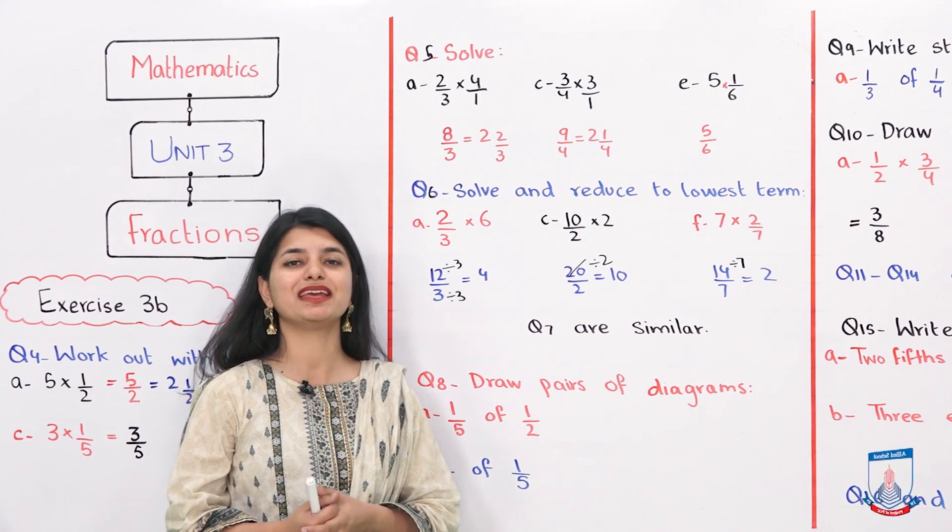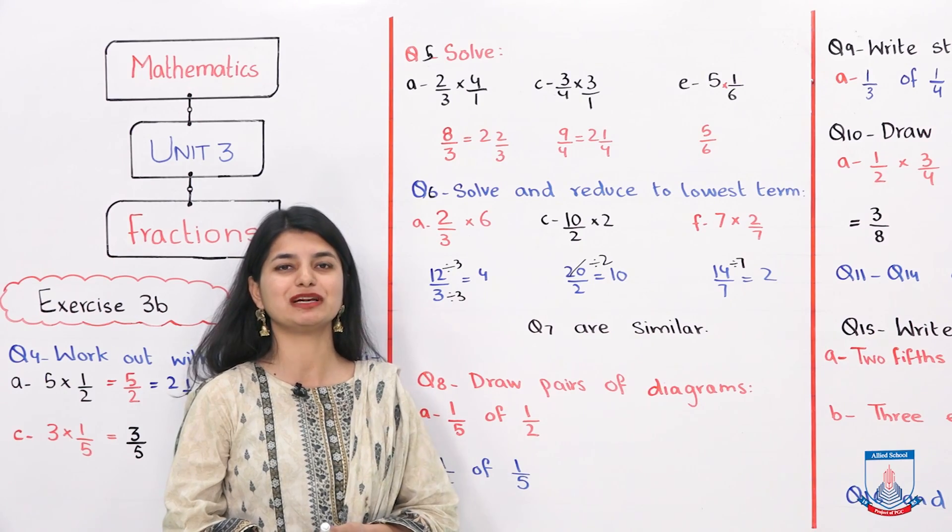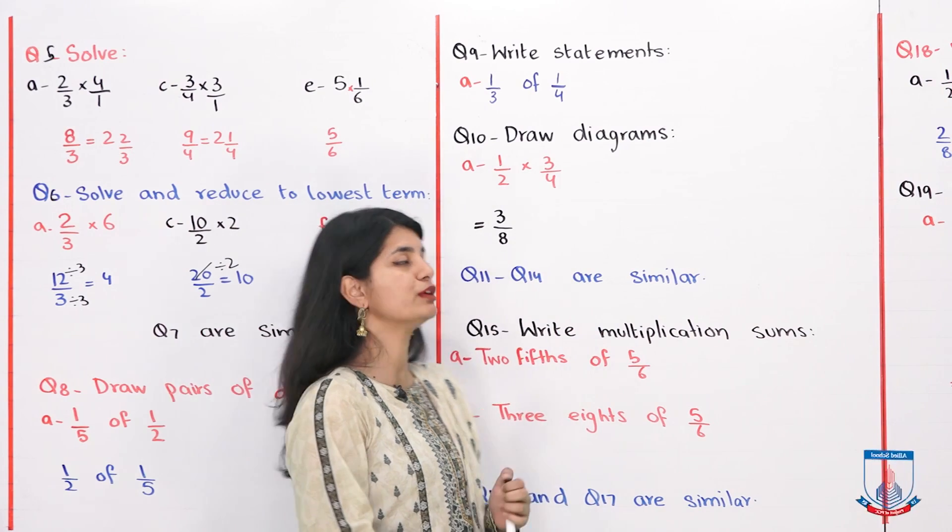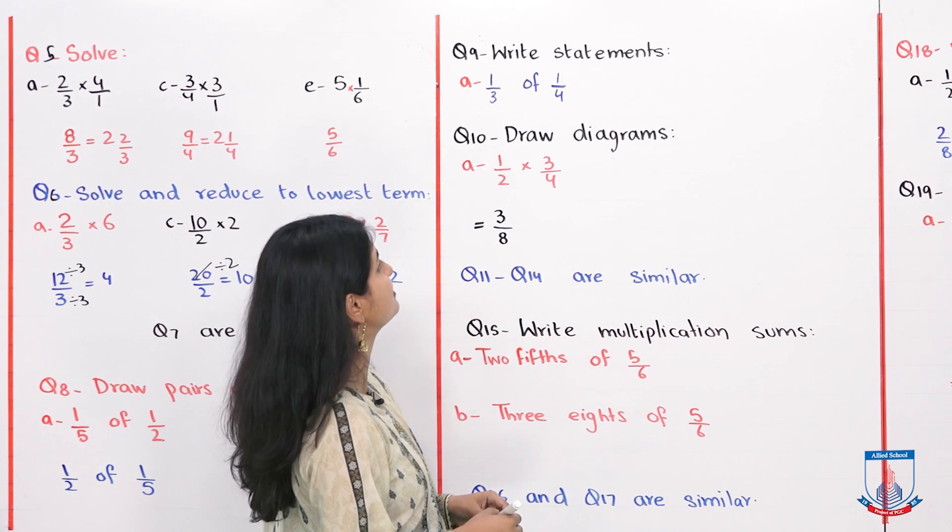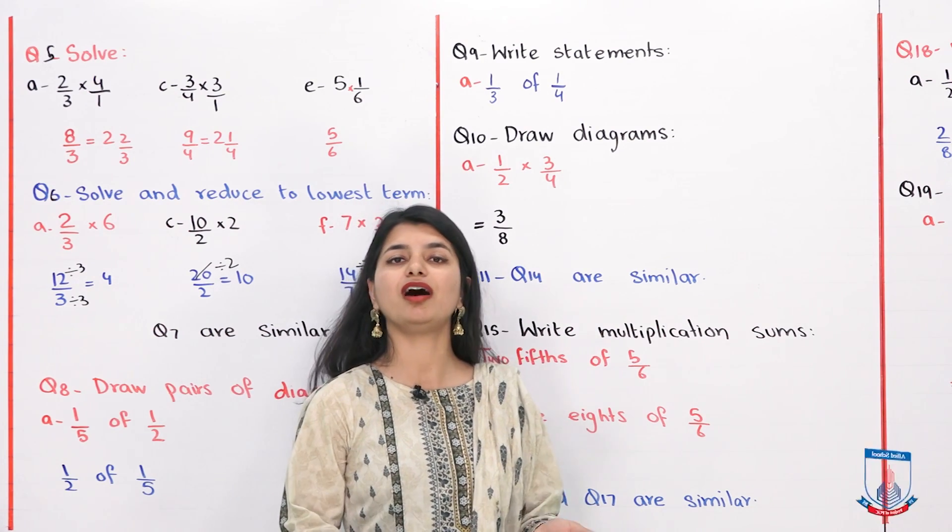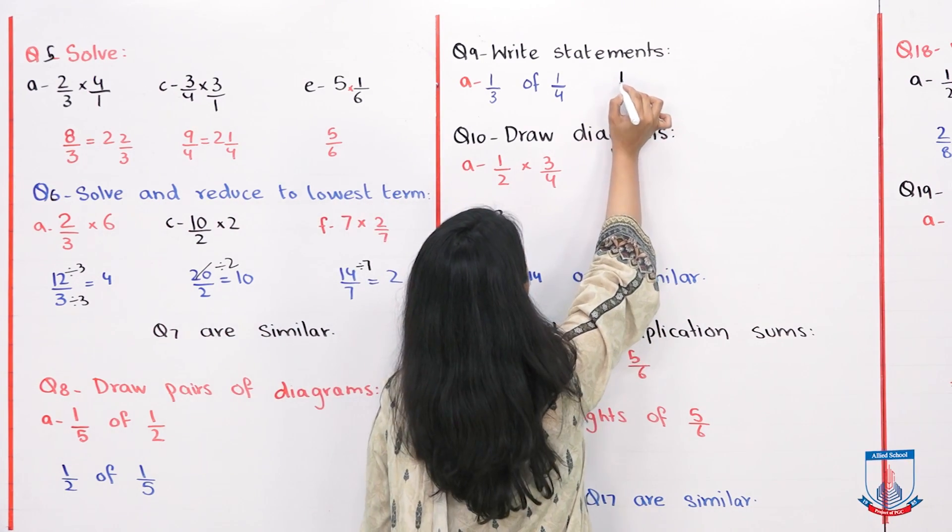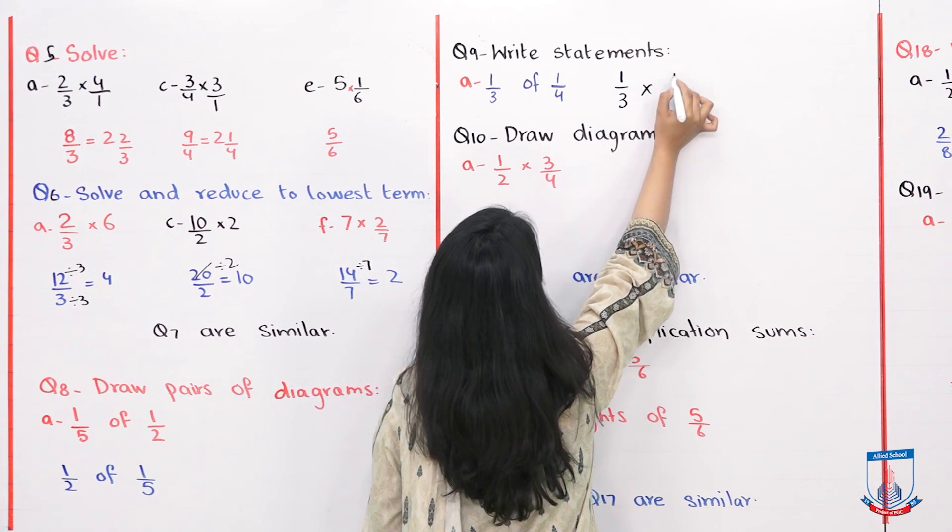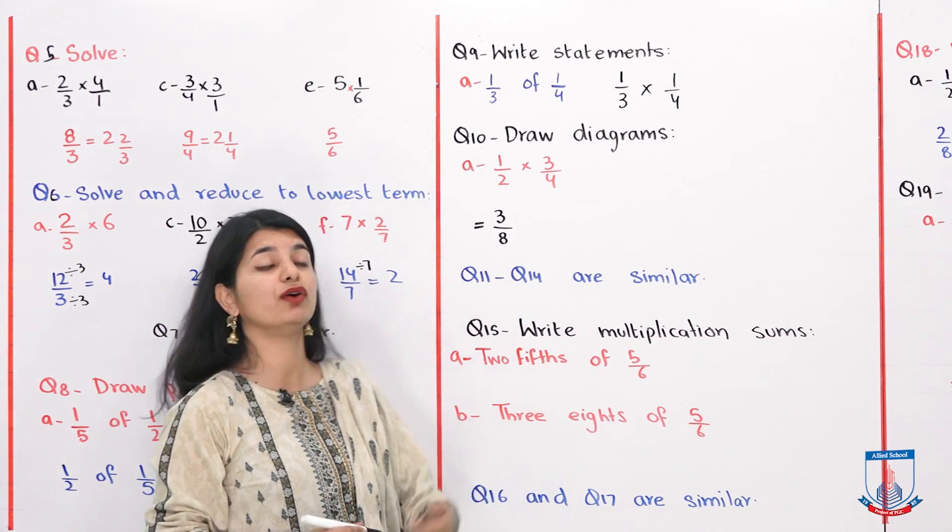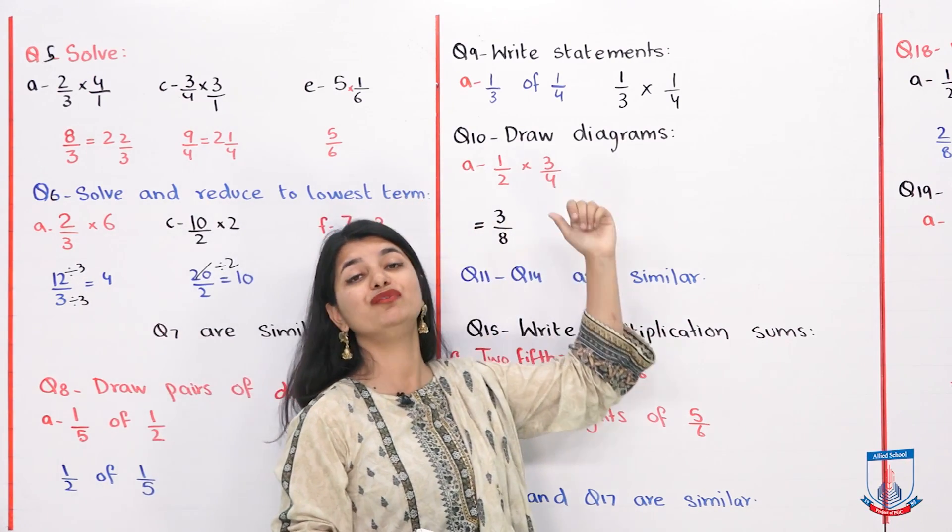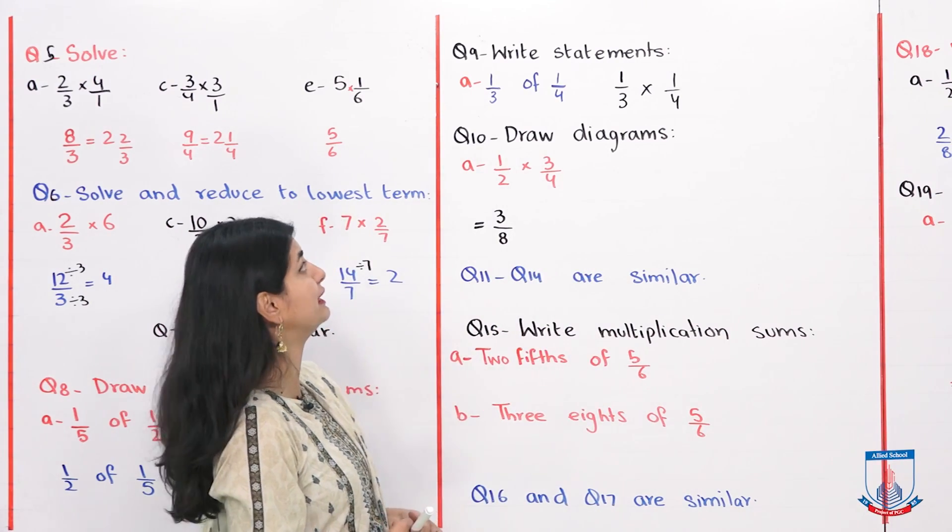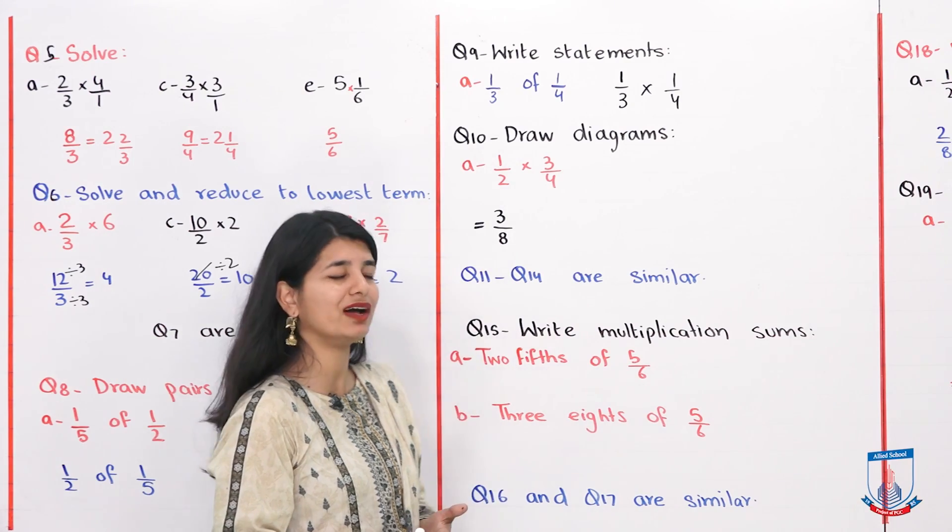We will see our next question which is question number 9. Question number 9 is write the statements. So if you have given 1 over 3 of 1 over 4, what do we do off? We do 1 by 3 into 1 by 4 and that's it. That will be your answer. You can write it like this. 1 third of 1 fourth. Because 1 third of 1 fourth. That's what you had to do in question number 9. This is the next part. It is very easy.